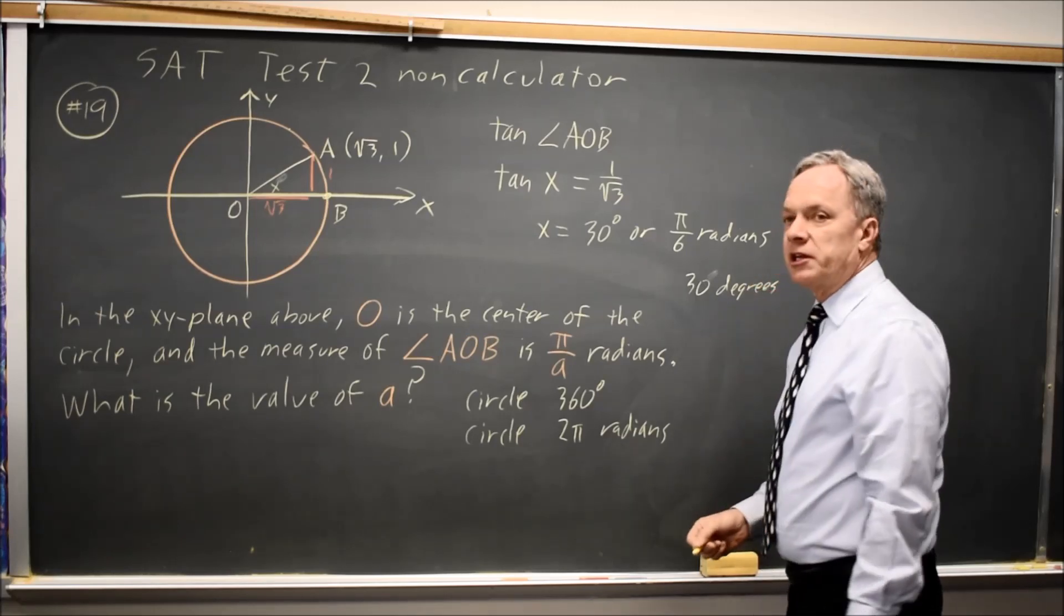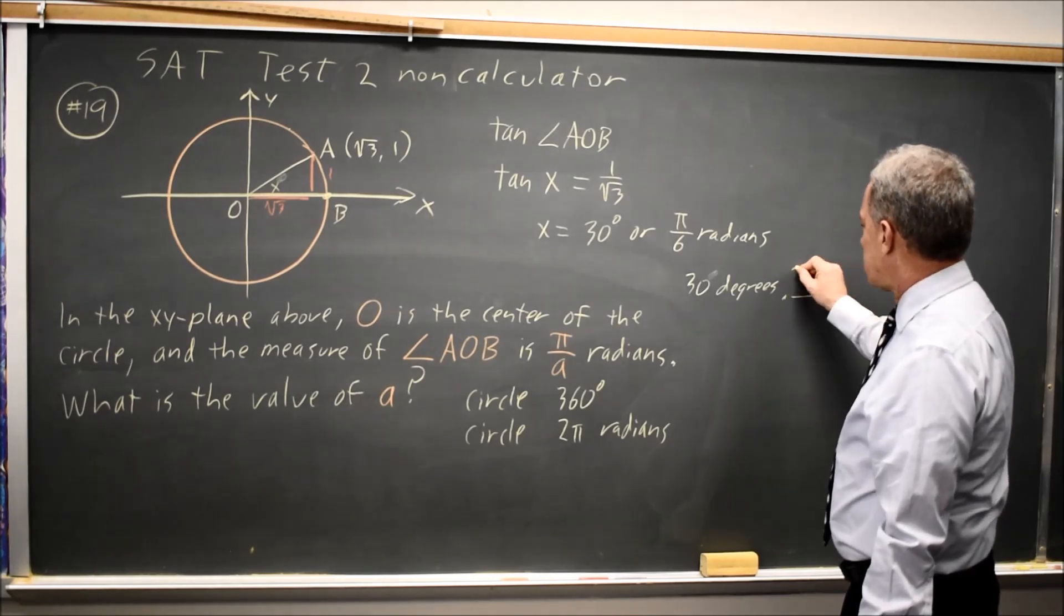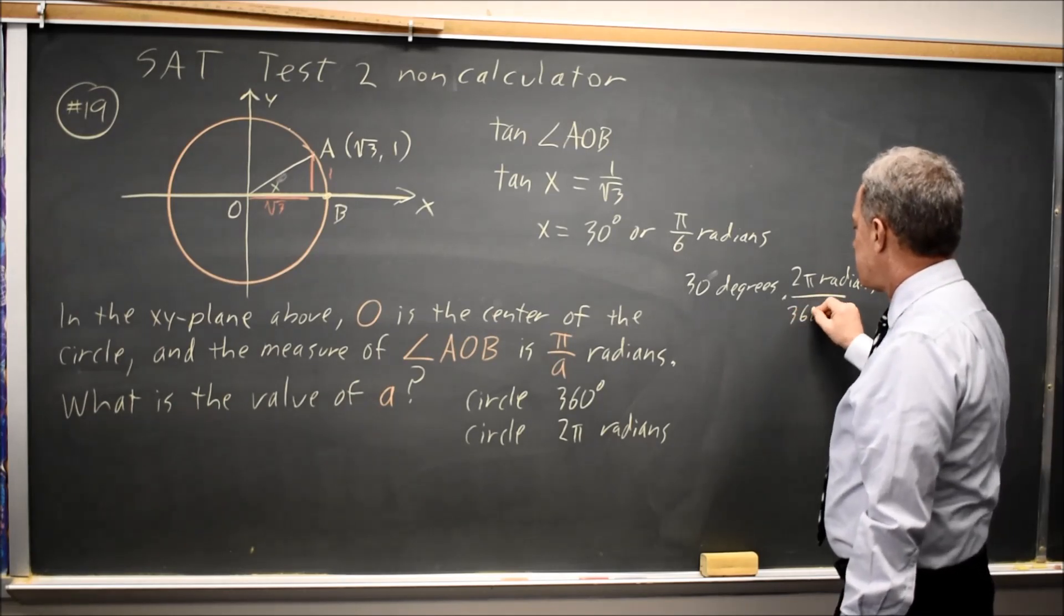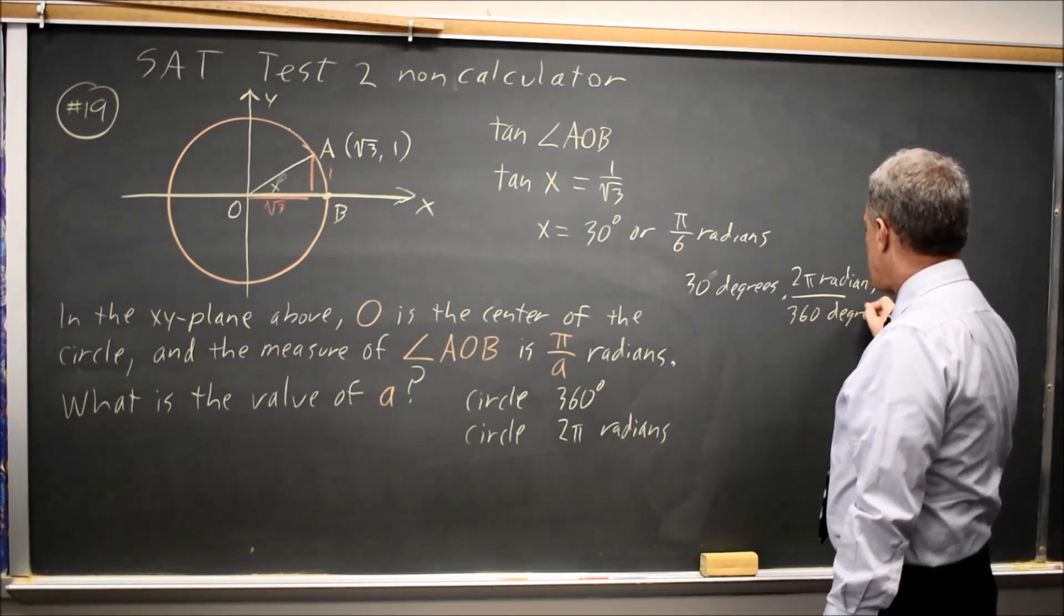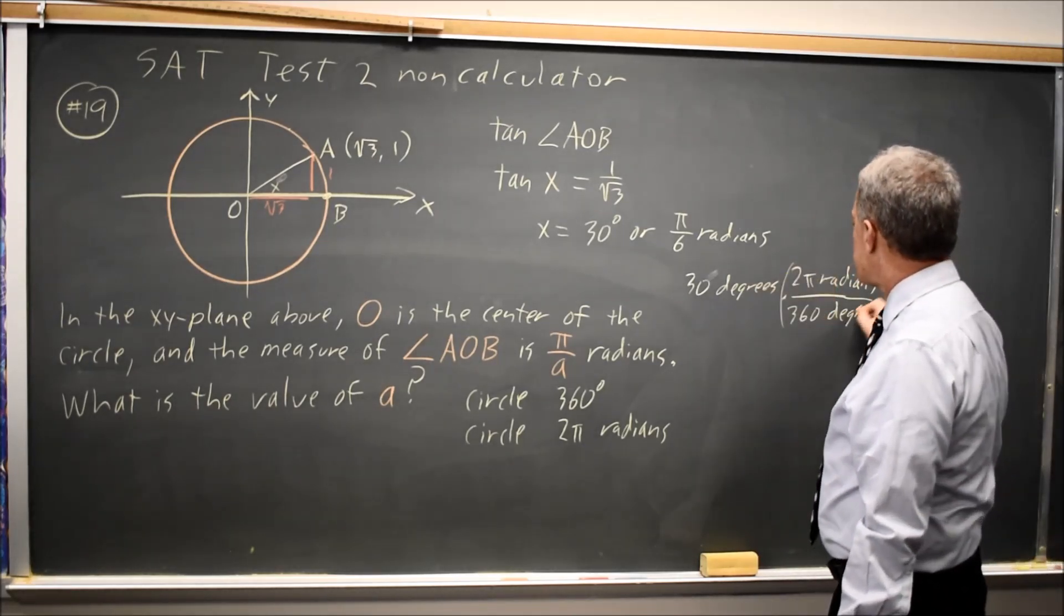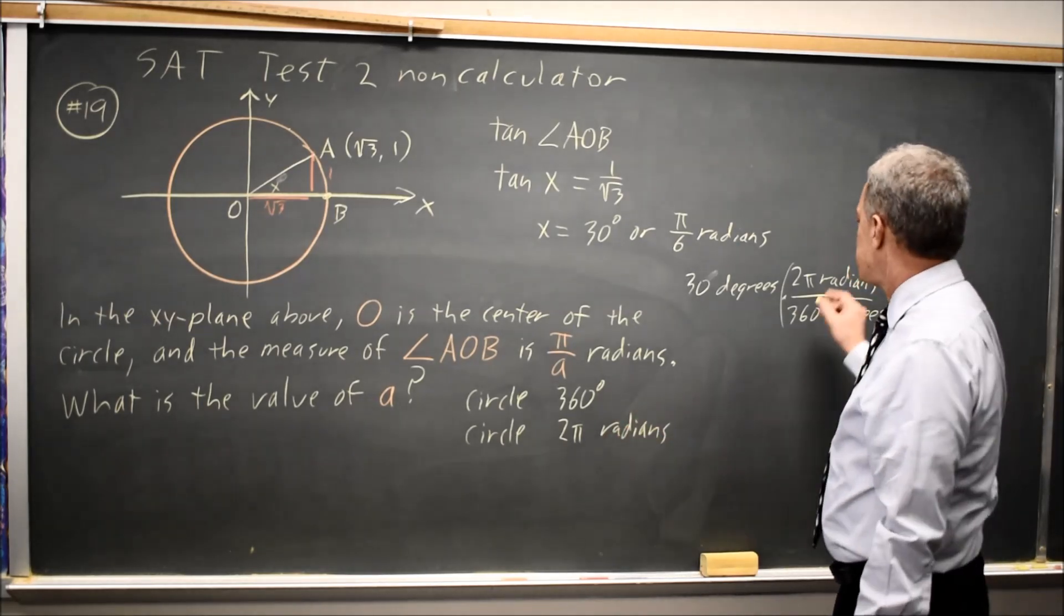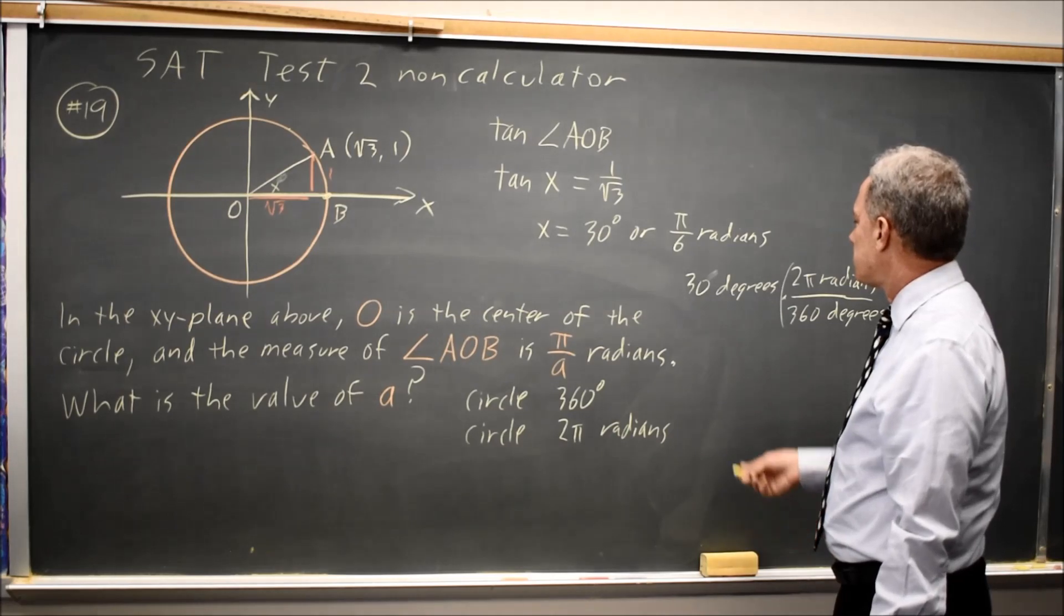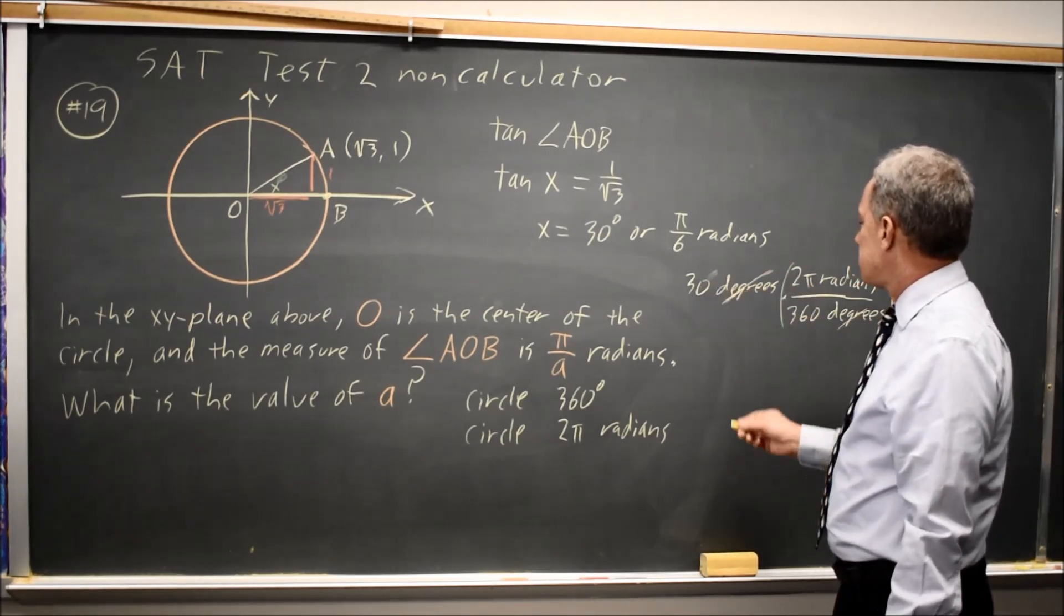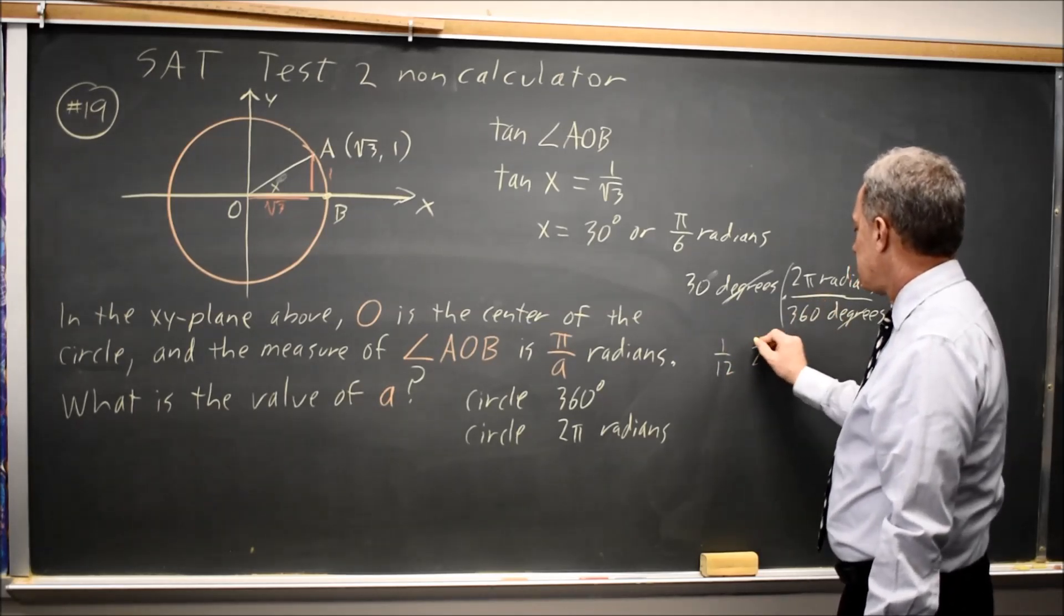That allows you to convert 30 degrees to radians by multiplying by the fraction 2 pi radians over 360 degrees. This is the same unit conversion we use in chemistry classes. We can cancel the degrees. 30 over 360 is 1 over 12 and that's times 2 pi radians.